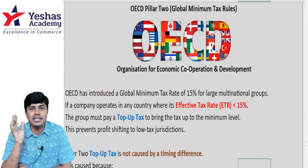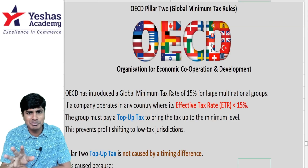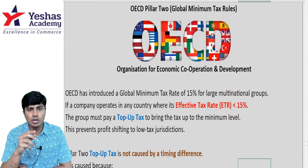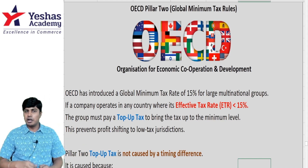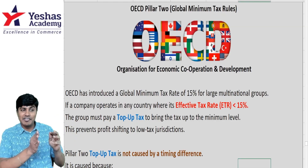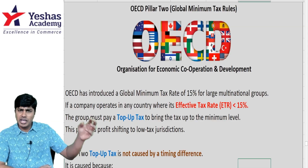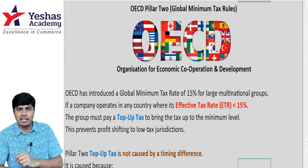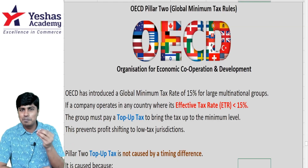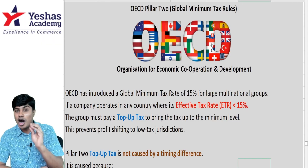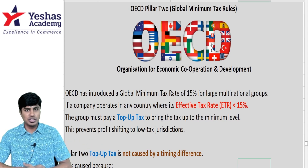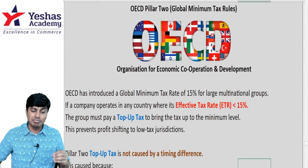Dubai had 0% corporate tax — right now it's 9%, but a couple of years ago it was zero. So instead of earning 100 rupees in India and paying 40 rupees as tax, I will open a new company in UAE and show a lot of my sales in my subsidiary there, paying only 9 rupees instead of 40 — saving 31. This is how multinational companies started creating subsidiaries in tax havens to save tax.